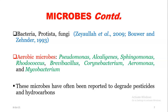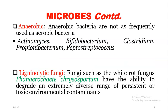We have aerobic microbes — examples include Pseudomonas, Alcaligenes, Sphingomonas, Rhodococcus, Brevibacillus, and Corynebacterium. These microbes have often been reported to degrade pesticides and hydrocarbons. Anaerobic bacteria are not as frequently used as aerobic bacteria; examples include Actinomyces, Bifidobacterium, Clostridium, and Propionibacterium.